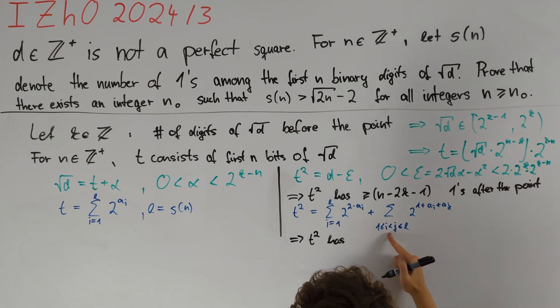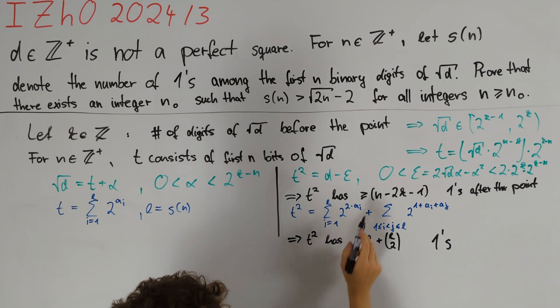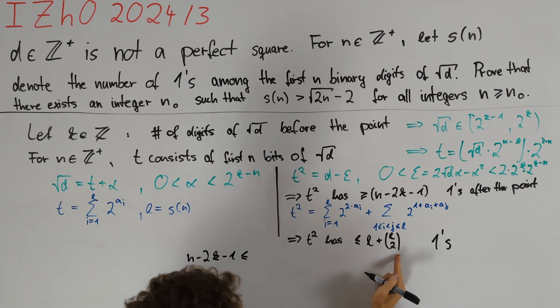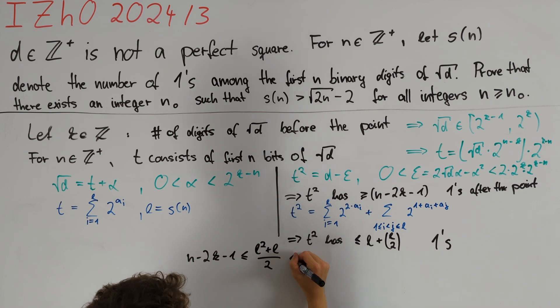All in all, n minus 2k minus 1 is less than or equal to this term, which equals l squared plus l over 2, which we generously bound from above by l plus 1 all squared divided by 2.